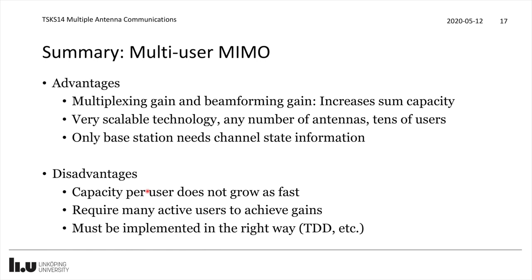Since you are able to serve multiple users, you still have the benefit that the sum capacity is growing. If you already have many users and previously needed to divide the spectrum between them, now you can serve all users at the same time with the full spectrum, and then benefit in terms of capacity per user. A disadvantage is that we require many active users to really see these gains. So if you have a cell with massive MIMO and only one user in it, you won't see fantastic gains. Operators will therefore select cells where they have a lack of capacity and put up a 5G base station with massive MIMO technology there.